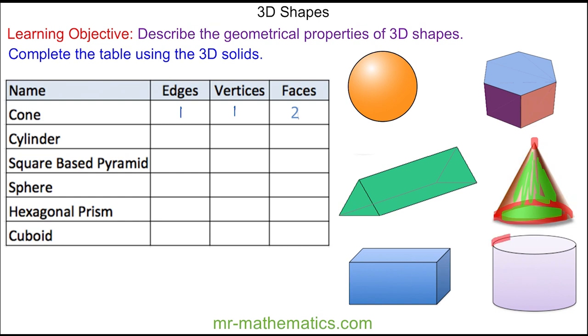A cylinder has an edge on the top and an edge around the circumference of the base, so two edges. There are no vertices, and you can see there are three faces: one circle on the top, another circle on the bottom, and the curved area that wraps around the two.